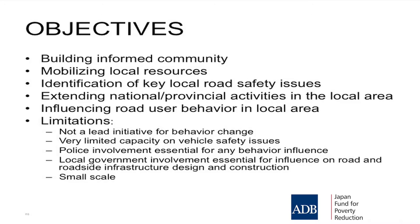Finally, you may seek to change or influence individual road user behaviours locally. It might be the children who leave the elementary school and cross the road dangerously. It might be restaurant patrons who come out and cross the road when they are alcohol impaired. It might be drivers who drive down the major village street too fast. If you can identify the behaviour, you can tackle it, and that's an appropriate objective.